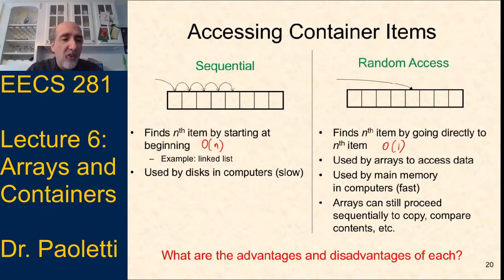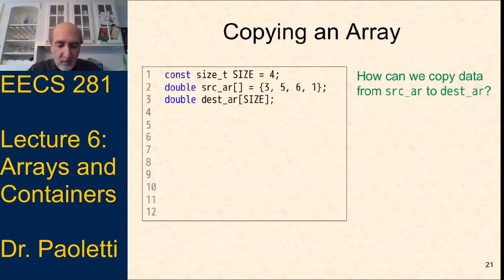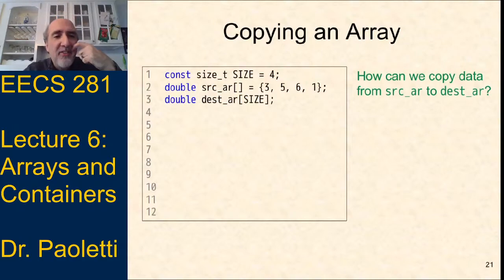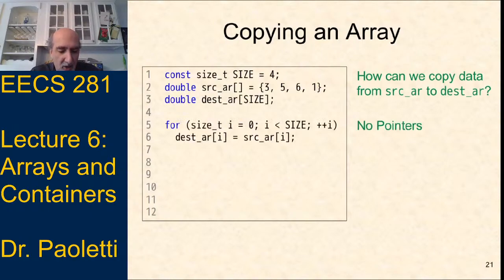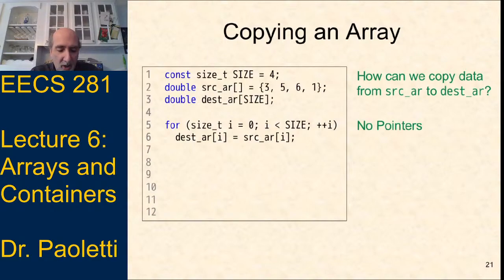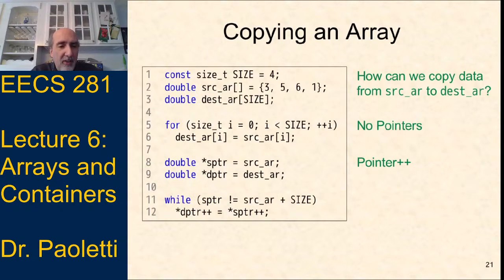If behind the scenes I have a linked list, I can only give you an efficient way to sequentially access things. Now if I want to copy an array — I've got a source array initialized to {3, 5, 6, 1} and a destination array — I could do it with a simple for loop: for each index, dst[i] = src[i]. Simple and it works.